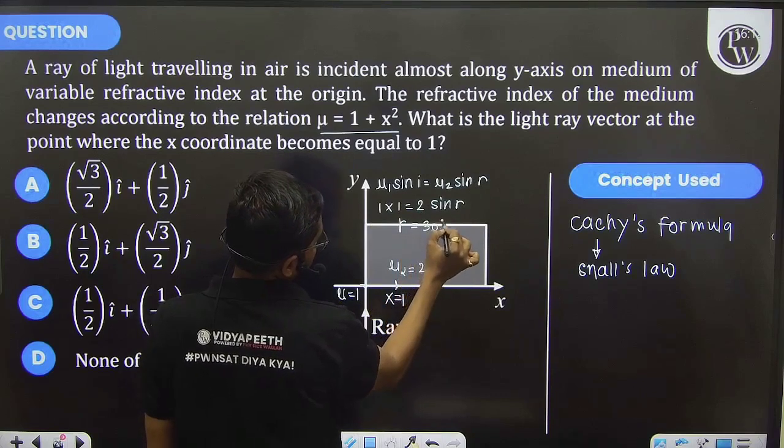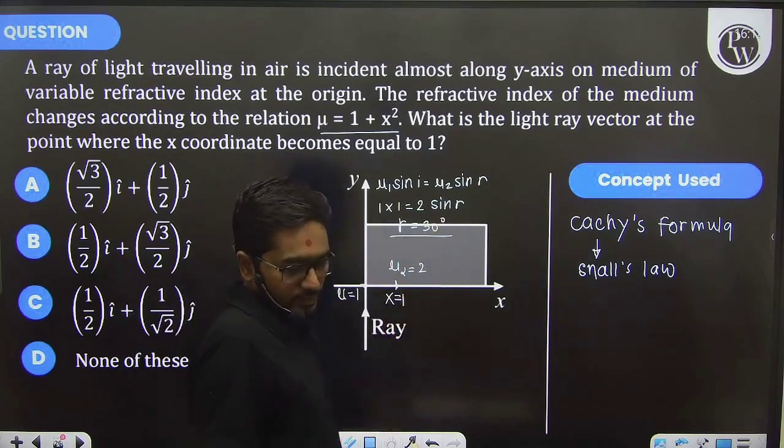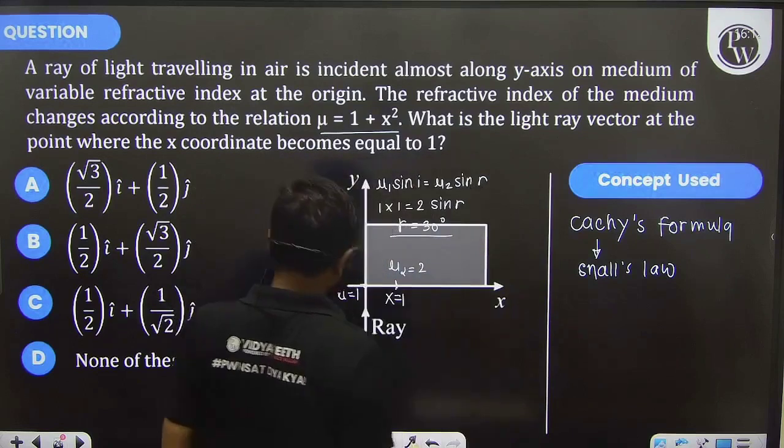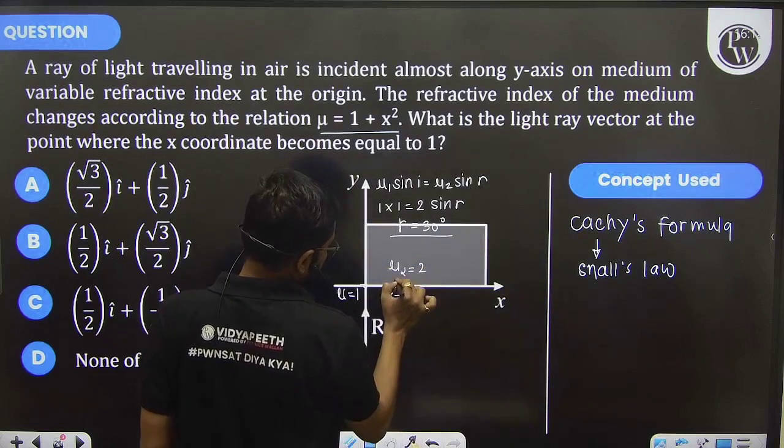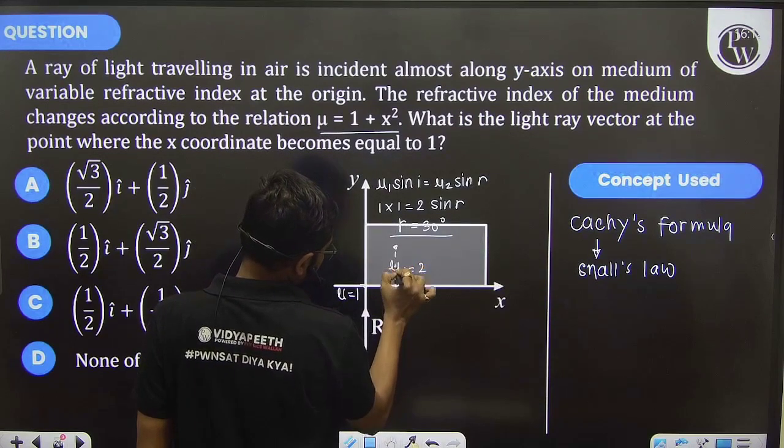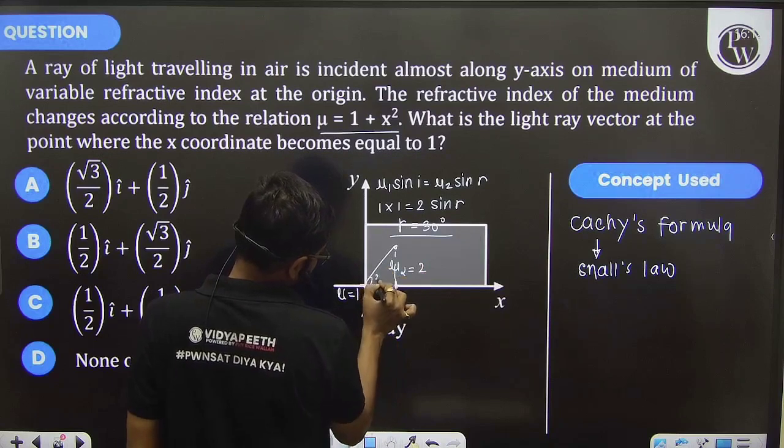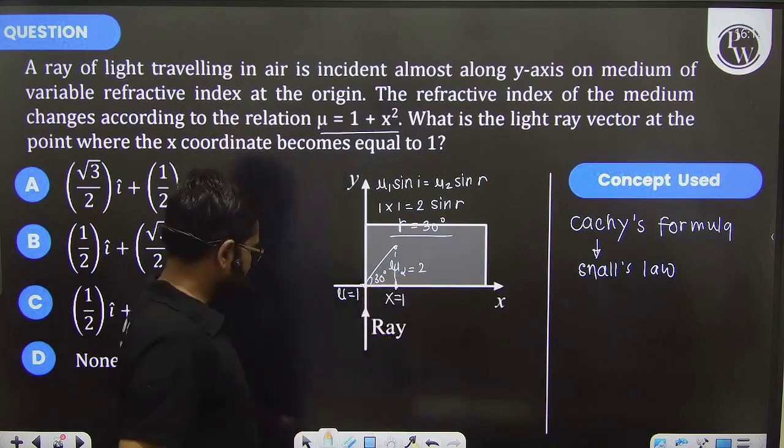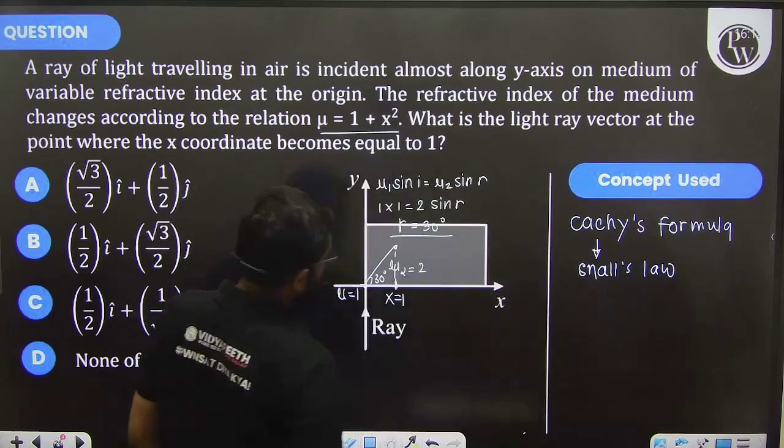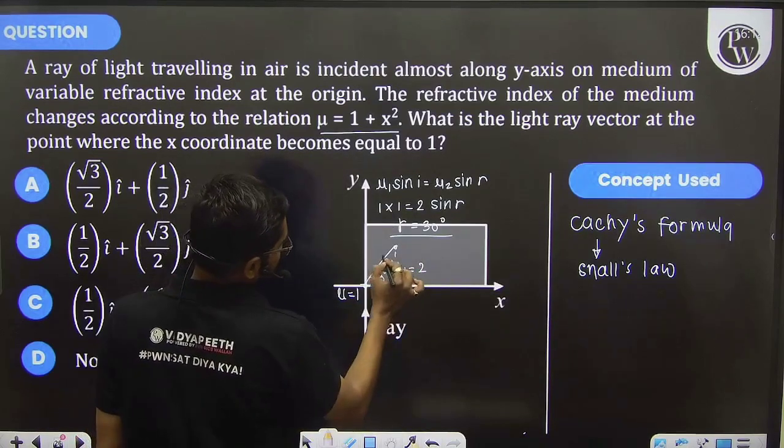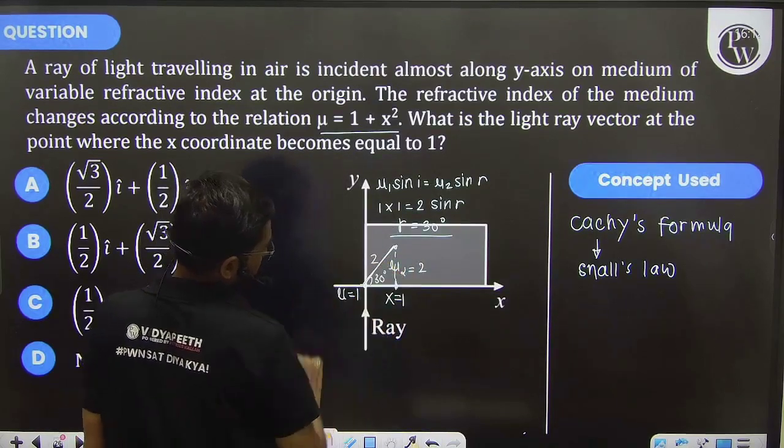Yes, r is 30 degrees. Since r is 30 degrees, whenever the light tries to enter here, this light is going to make a 30 degree angle with the x-axis, and this value is going to be 2.